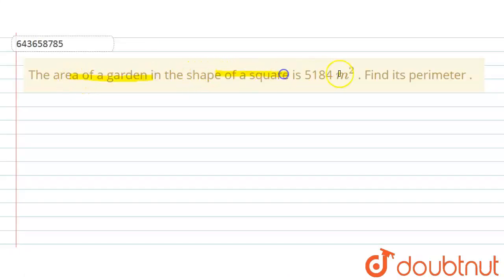Hello everyone, the question says that the area of a garden in the shape of a square is 5184 meter square. Find its perimeter.